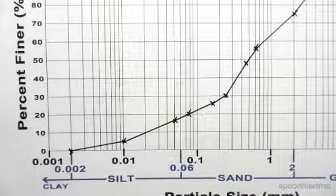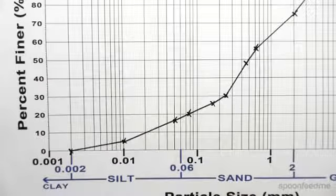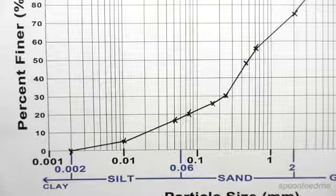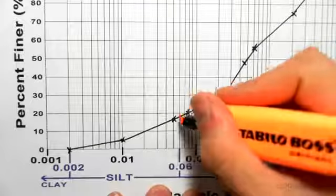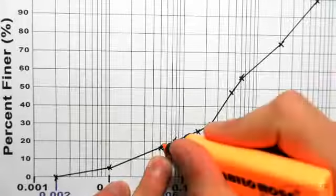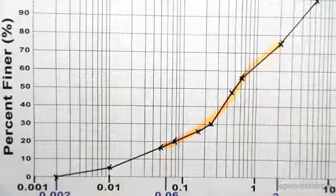So we come to our grading curve and we highlight the sand spectrum and the gravel spectrum. I'll do the sand in orange. The sand ranges from 0.06, which is there, to 2, which is up there. I'll highlight all that region—that's all sand.